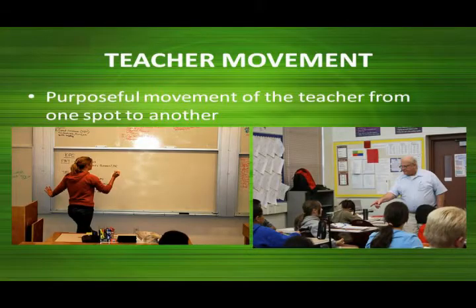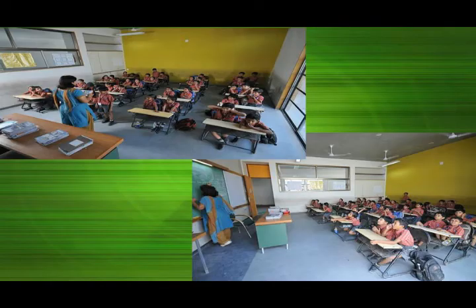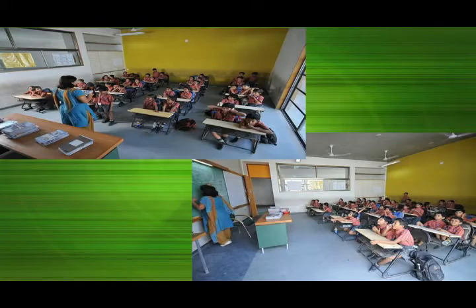Competence and description of the skill of stimulus variation. First component: teacher movement. The description of the teacher movement competences are: movement of the teacher from one spot to another with a specific purpose; moves to the blackboard to write something; moves to the back of the classroom to check what students are doing. These are purposeful movements of the teacher from one spot to another.